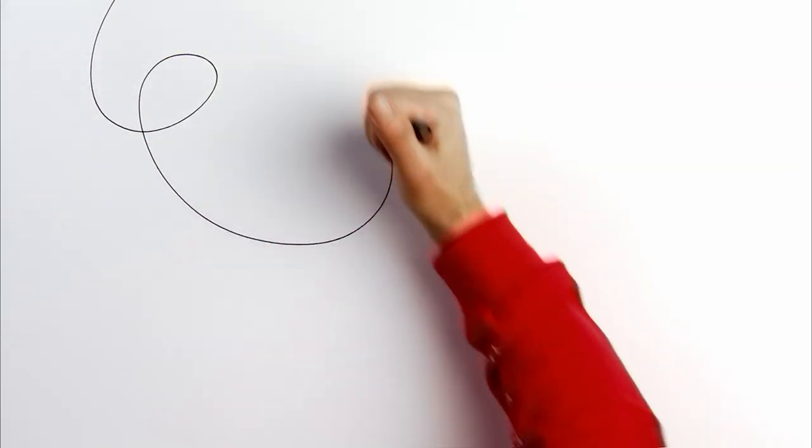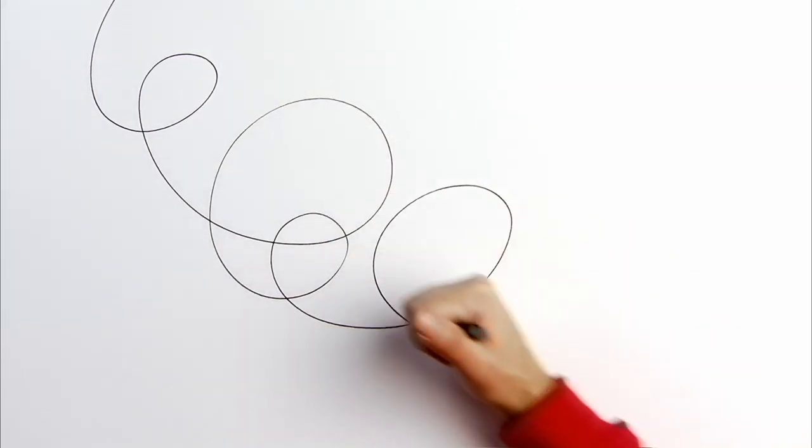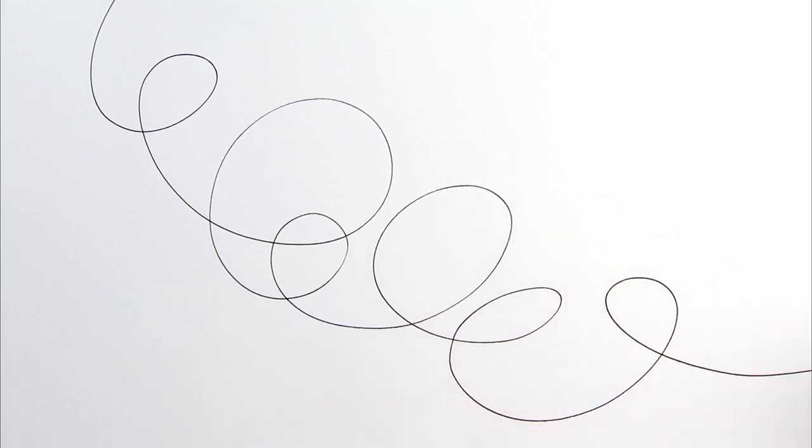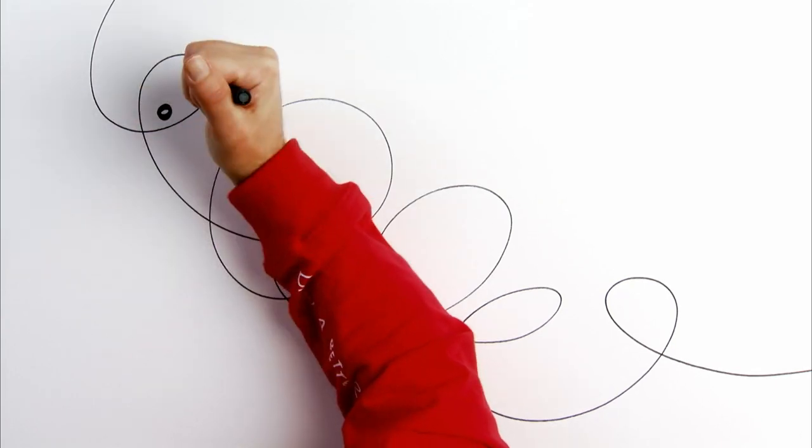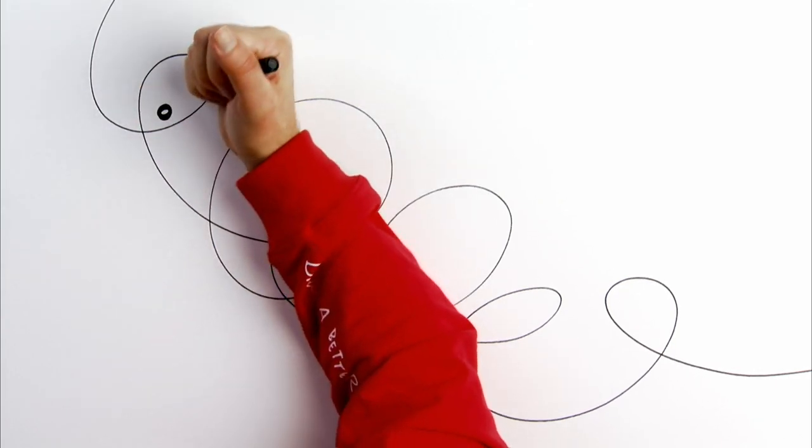I start at one end of the paper and draw a squiggle right across the paper and out on the other side. Then I add a few black eyes with a white spot in the middle.